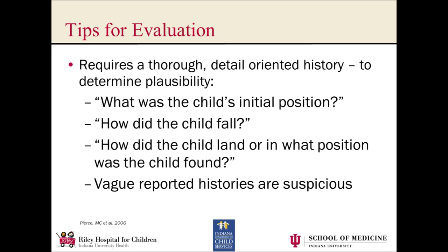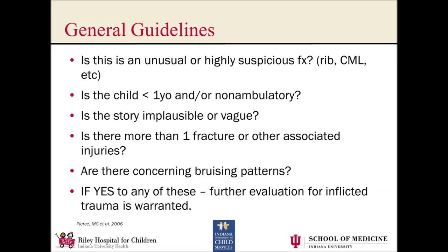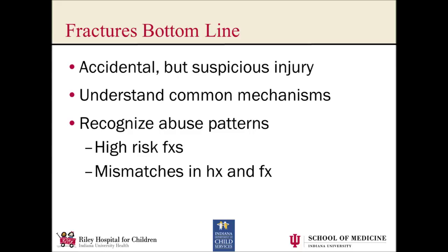Now unfortunately, when it comes to fractures, we don't have a decision rule — there's no PERC-type rule here. But there are some good guidelines that can help us. If you answer yes to any of the key questions, more of an evaluation is warranted. Bottom line for this case: accidental but clearly suspicious injury. We need to understand the common mechanisms of injury, recognize high-risk fractures and patterns, and look out for any mismatches between the history and the fracture we see.